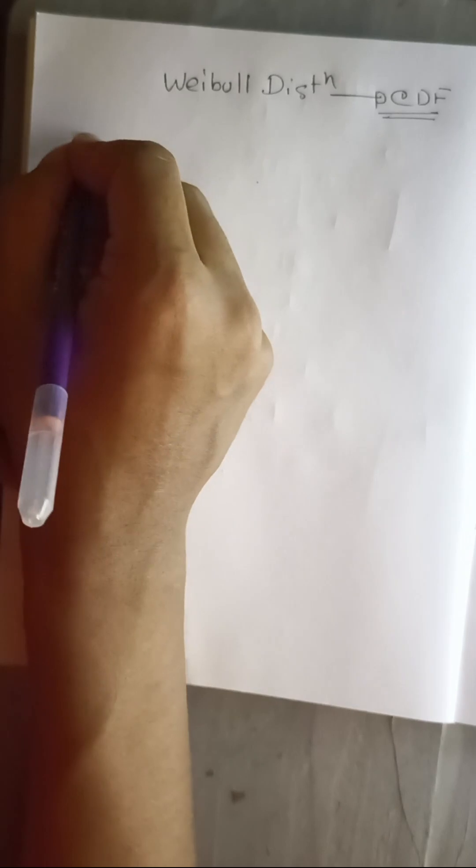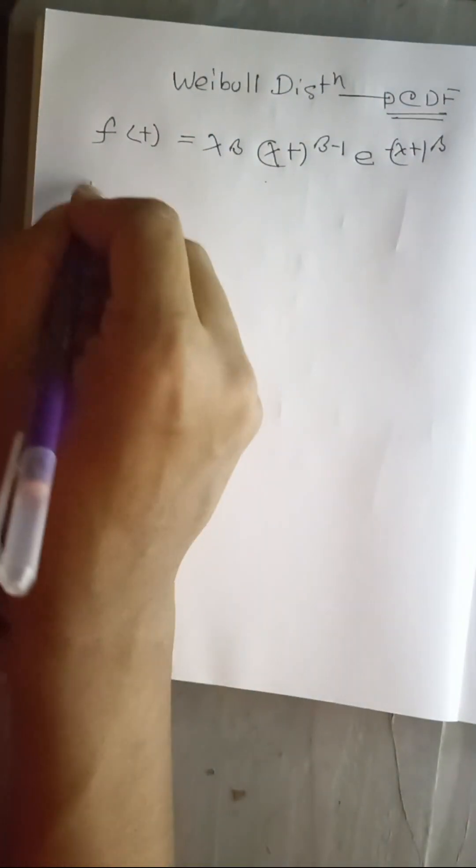Hello everyone. In this class we will find the CDF of the Weibull distribution. As we know, the Weibull distribution has a PDF — the density function f(t) — equal to λβ(λt)^(β-1) times e to the power of minus (λt)^β.